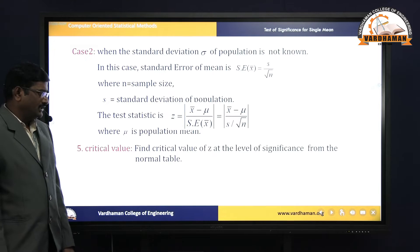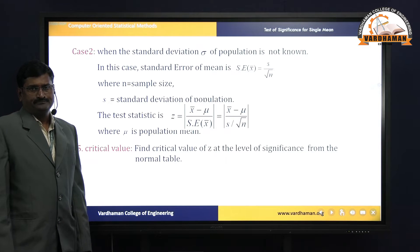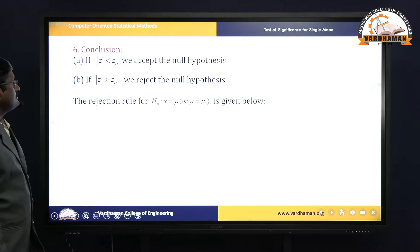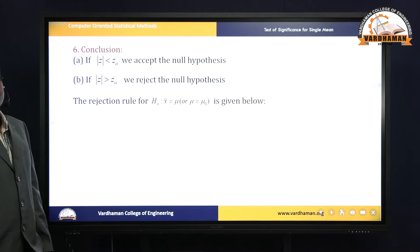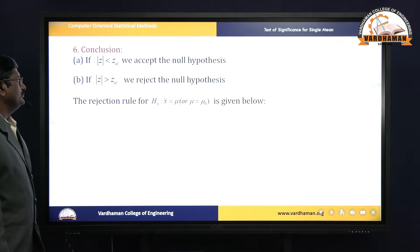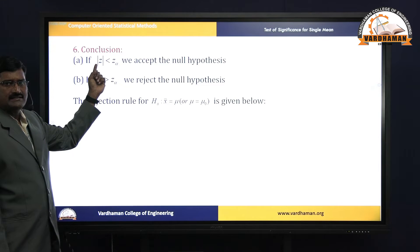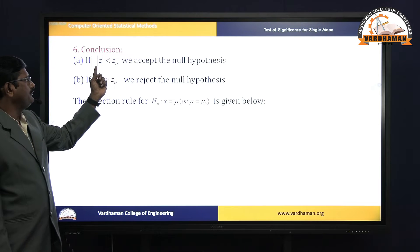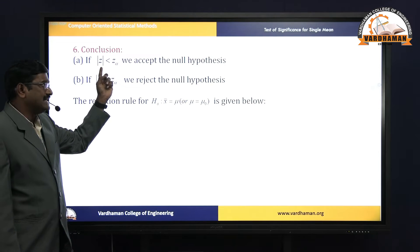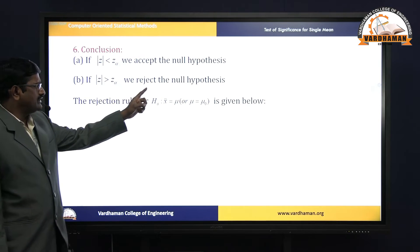The fifth working rule is critical value. The critical value is considered at the specified level of significance using the normal table. The sixth working rule is conclusion: compare z-calculated with z-table. If z-calculated < z-table (z-alpha), we accept the null hypothesis. If z-calculated > z-table, we reject the null hypothesis.